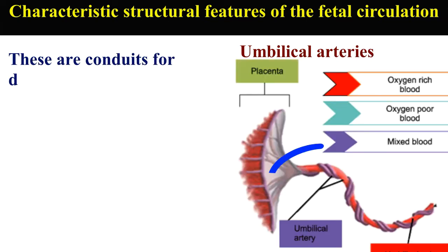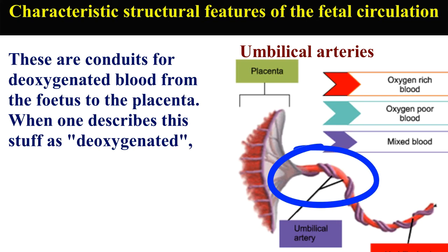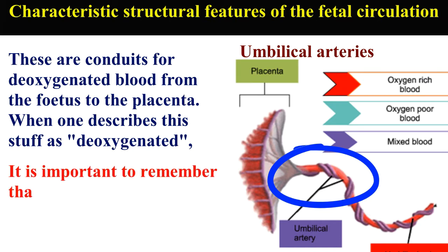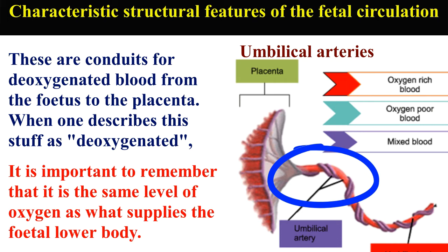Umbilical arteries. These are conduits for deoxygenated blood from the fetus to the placenta. When described as deoxygenated, it is important to remember that it is the same level of oxygen as what supplies the fetal lower body. These vessels originate from the common iliac arteries and wind spirally up the umbilical cord together with the umbilical vein.